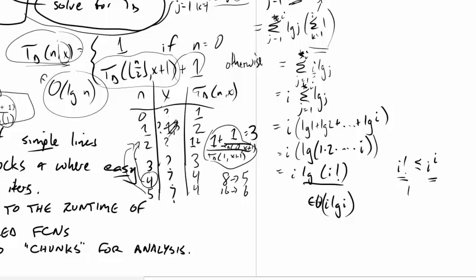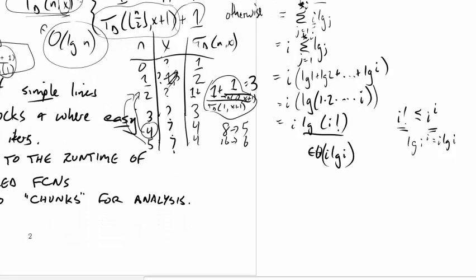What about a lower bound? Well, again, what we can do is we can look back up here, and somewhere in the middle, we're going to get up to i over 2, right? And we're going to take that last half of the terms here, and we're going to throw out the earlier terms.